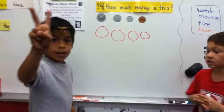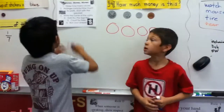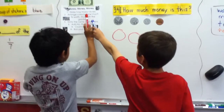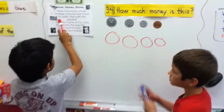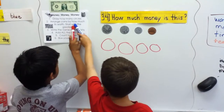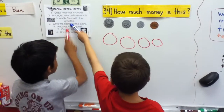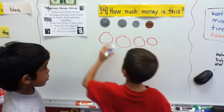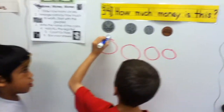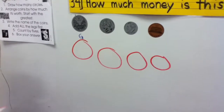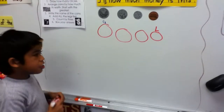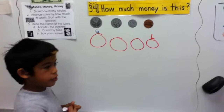Step 2: Arrange coins by how much each is worth. Start with the greatest. G is for greatest.